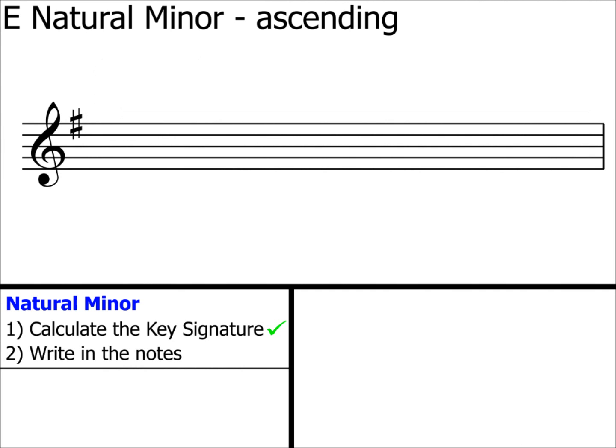This is step 2. Write in the notes. Write in the notes from E. E because we're dealing with E minor. If we were dealing with B minor, we'd start on a B. C minor, we'd start on a C and so on. All the way up to the next E. Remember, we've been asked to create an ascending scale, hence why we're going up.